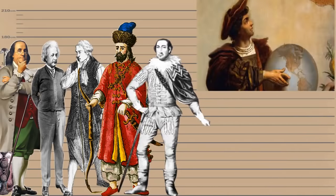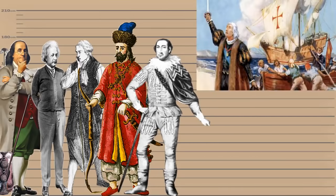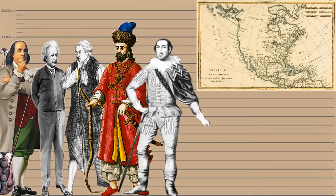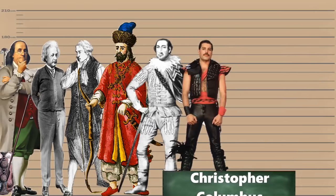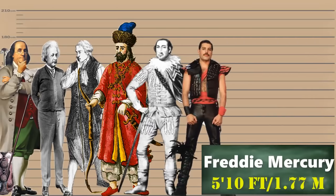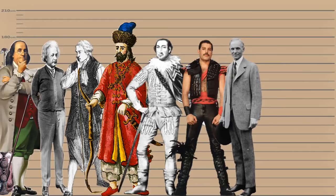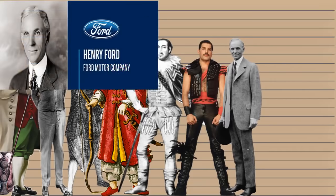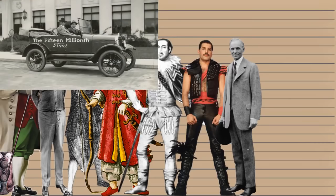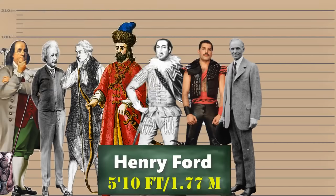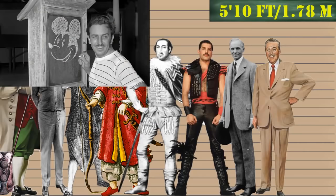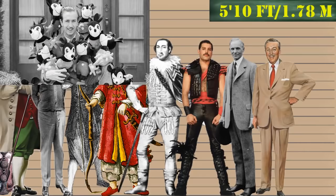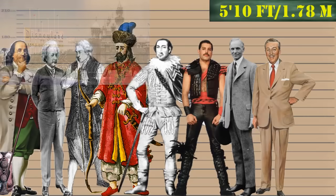Followed by the Italian explorer, navigator and colonist who completed four voyages across the Atlantic Ocean and most importantly discovered America — Christopher Columbus was 5 feet 10 inches. Next we have the flamboyant legendary lead singer of the band Queen — Freddie Mercury, who also scaled at 5 feet 10 inches. Moving on we have the American captain of industry and business magnate, founder of Ford Motor Company — Henry Ford was 5 feet 10 inches. Also at 5 feet 10 inches we have the American entrepreneur, animator, voice actor and film producer who was the pioneer of the American animation industry — Walt Disney.